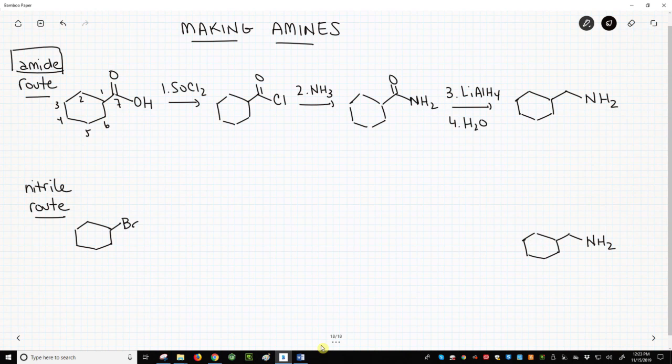Perfect. The second synthesis starts with an alkyl halide. The alkyl halide has just six carbons, and we need seven, so we'll need to add a carbon in this reaction sequence. Let's add the carbon with cyanide.